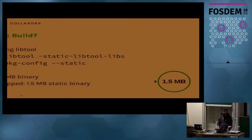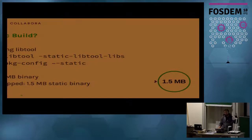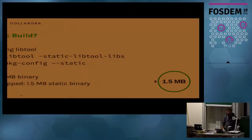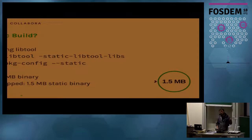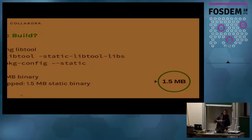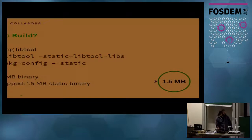The solution is to make a static build — we only build in the parts of the libraries we're actually using. Using libtool with static libtool libs, that's a trick to compile statically only the parts that have LA files. My sysroot, which is a bit like Yocto but to build an SDK for GStreamer, generates LA files. Using this I can statically link the bits from the sysroot, but not the bits from the device. That gives a binary of 7.5 megs, stripped to 1.5 megs.